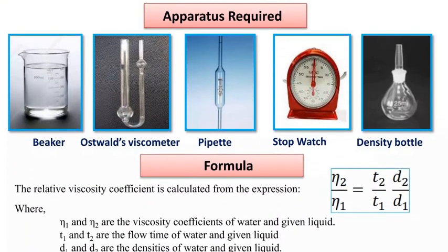Apparatus required: beaker, Ostwald viscometer, pipette, stopwatch, and density bottle. Keep in mind this tube bulb, where you will pour, where is the suck. Here is the pipette, and you see a stopwatch. Check which stopwatch is working properly or not, and density bottle.